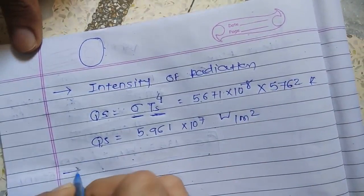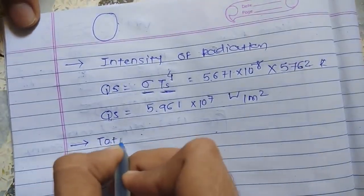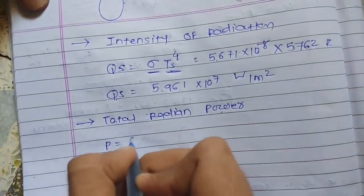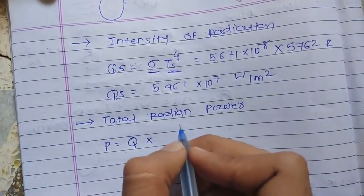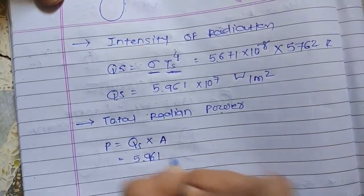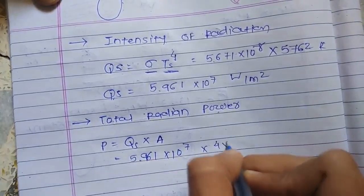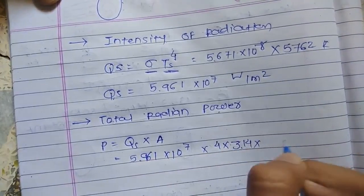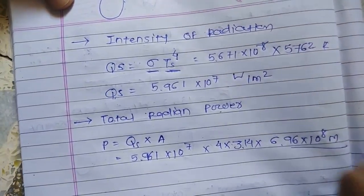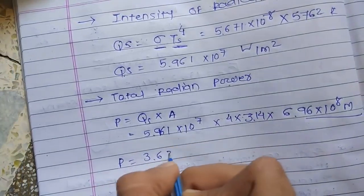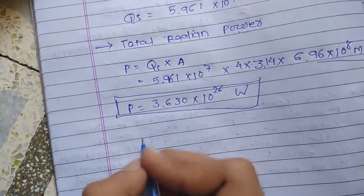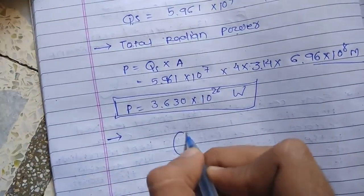Next, we calculate the total radiant power of the sun. Power P equals the intensity multiplied by the surface area of the sun: 5.961 × 10⁷ multiplied by 4πr², where the radius of the sun r is 6.96 × 10⁸ meters. Calculating this gives a total power of 3.630 × 10²⁶ Watts.